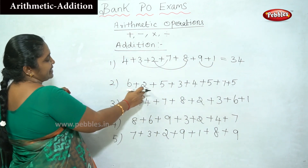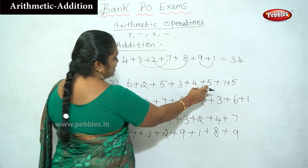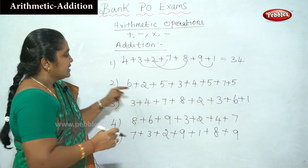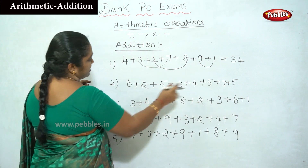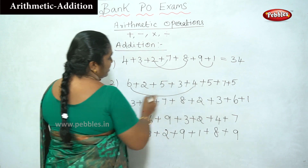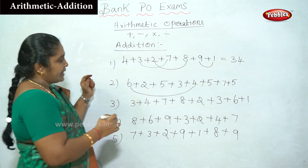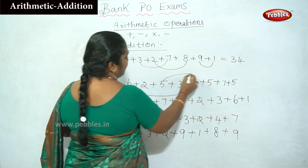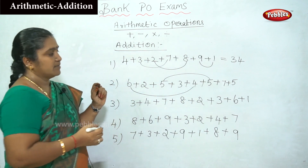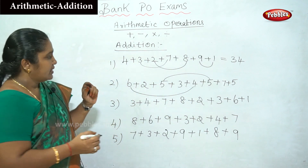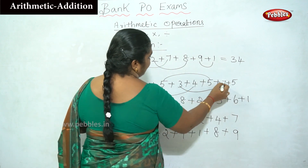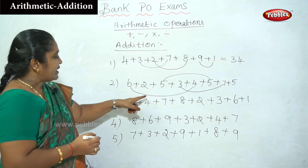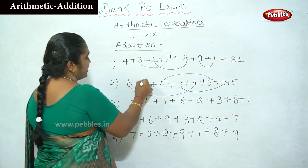Here we can see: 6 plus 2 plus 5 plus 3 plus 4 plus 5 plus 5 plus 7 plus 5. How can we add this? See — 6 plus 4 is 10. Then 5 plus 5 is 10. Then 3 plus 7 is 10. The remaining digits are 2 and 5.